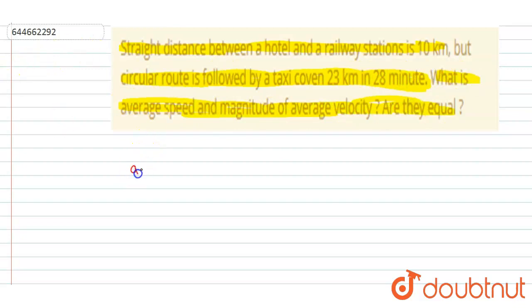So if I talk about the average speed first, it is equal to the total distance traveled by the total time.